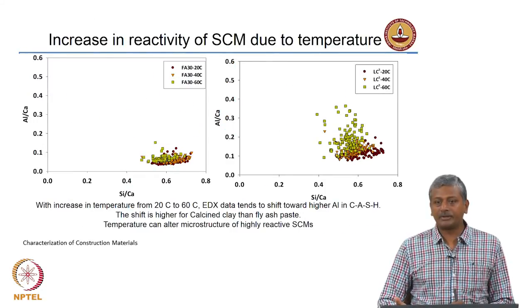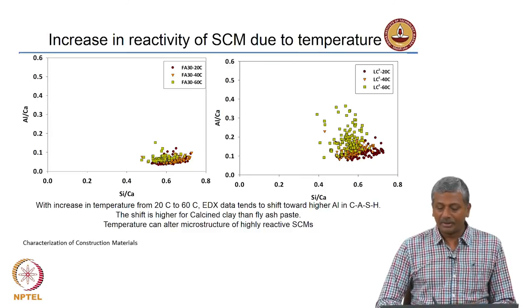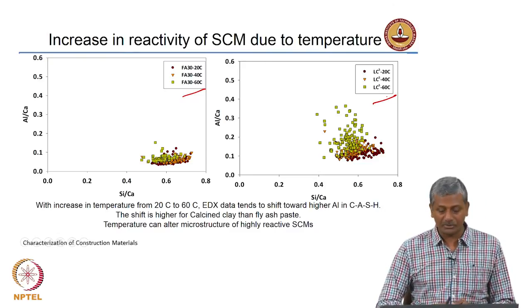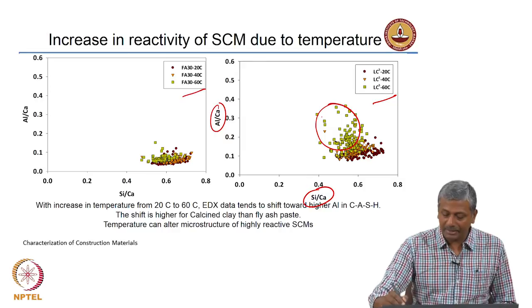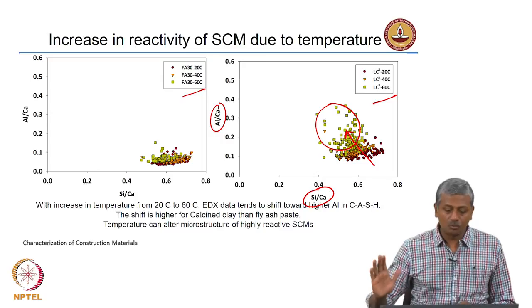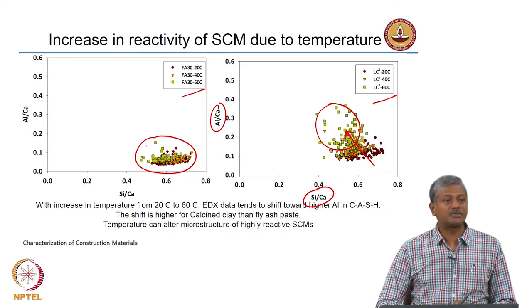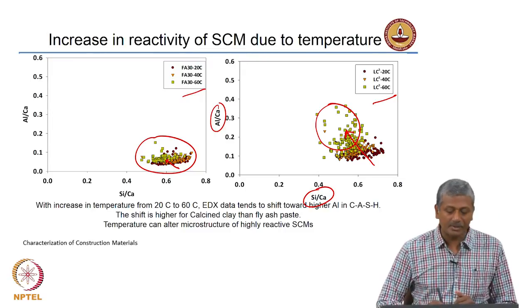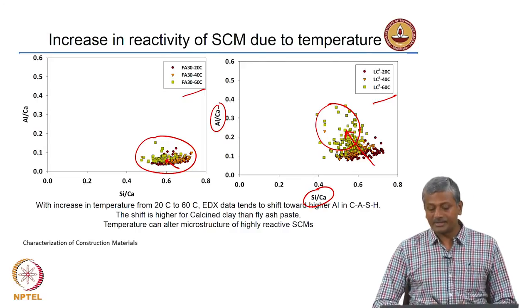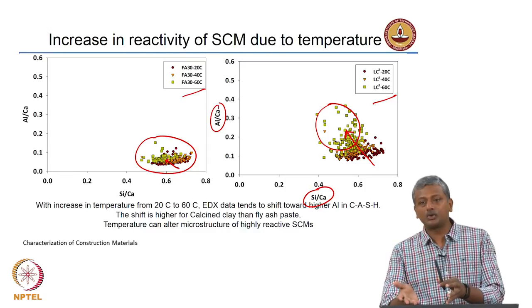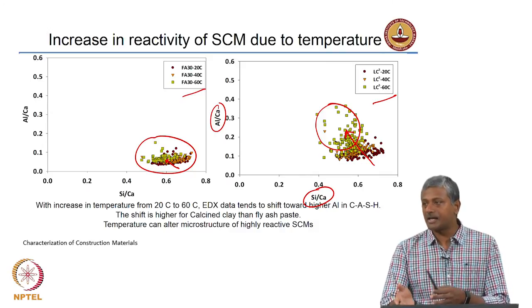The scanning electron microscopy images of ordinary Portland cement paste at different temperatures — 20, 40, and 60 degrees Celsius — were shown earlier. Here is an example of fly ash and LC3 systems at different temperatures showing what really happens to the composition. The aluminum-to-calcium ratio versus silicon-to-calcium ratio plot shows that as temperature increases the plot moves more and more to the left. In LC3 (limestone calcined clay) systems the effect is much more significant compared to fly ash systems, indicating a major change in phase composition with temperature change.